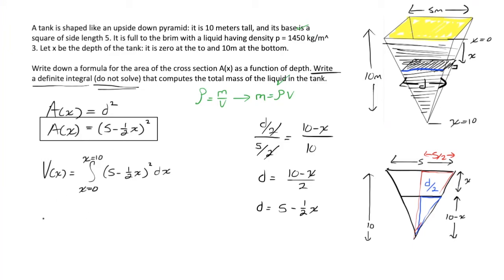If you want to talk about your mass as a function of x, multiply this volume expression by the density, 1450 kilograms per meter cubed times the integral from 0 to 10 of 5 minus 1 half x squared dx.